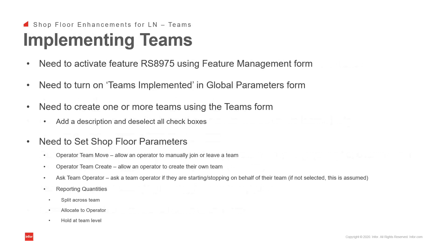In order to implement teams we need to activate feature RS8975 using the feature management form. Until this is activated no teams capabilities are presented. We then need to turn on teams in the global parameters form, and create one or more teams using the teams form, adding a description and deselecting all the checkboxes.